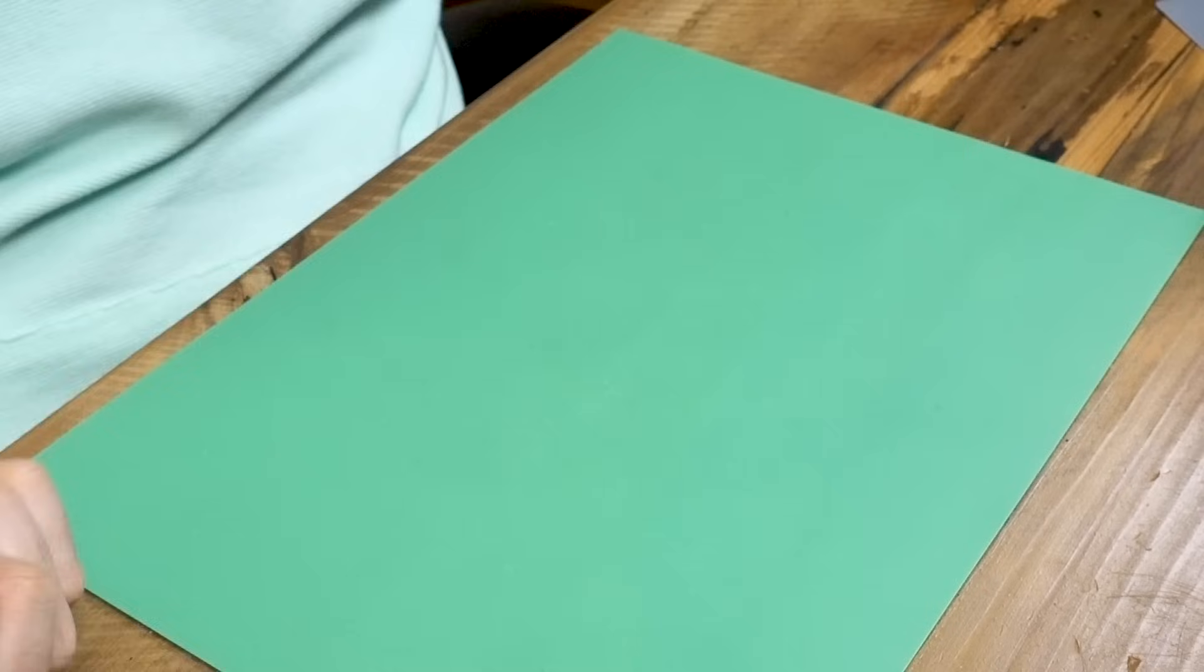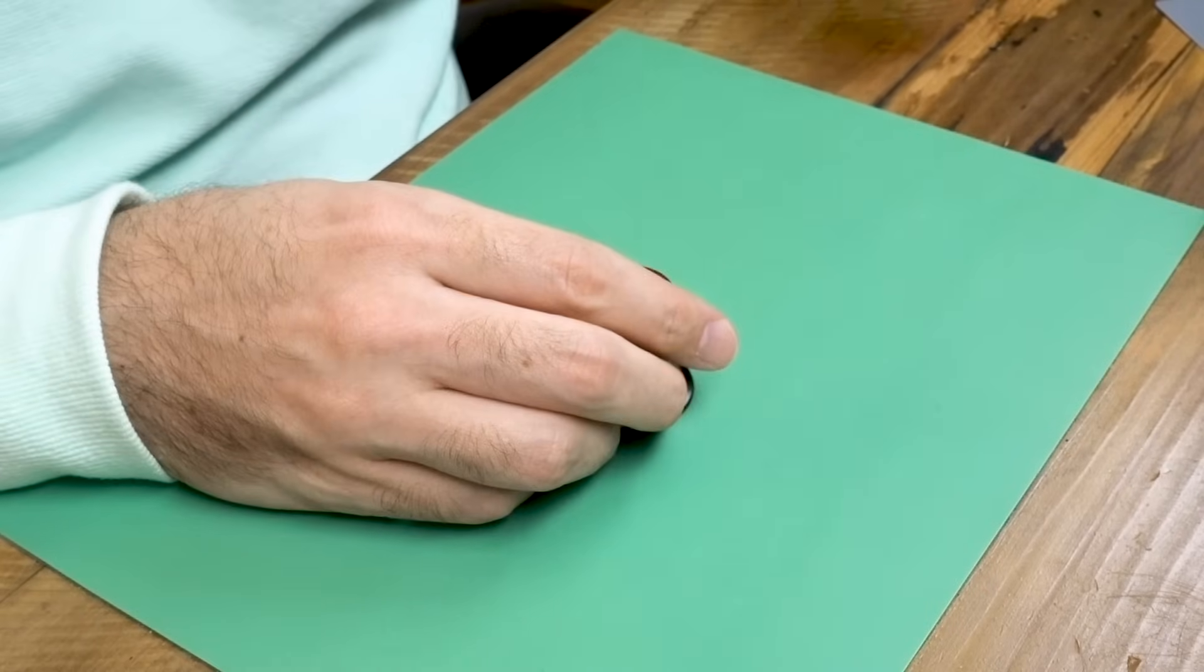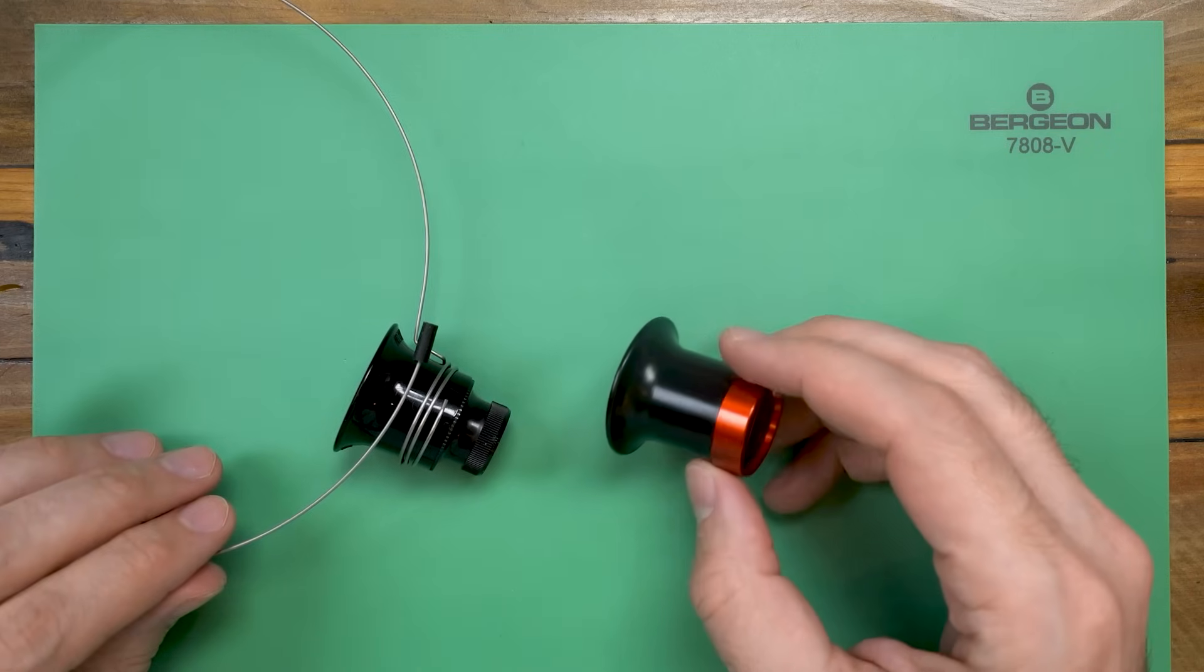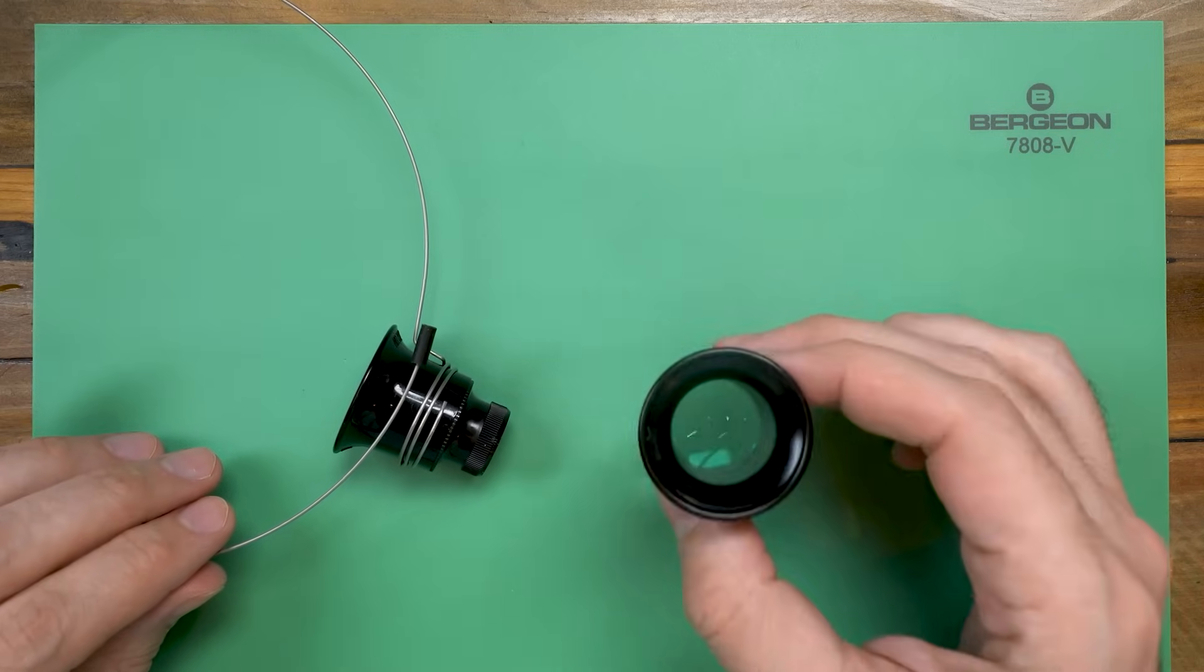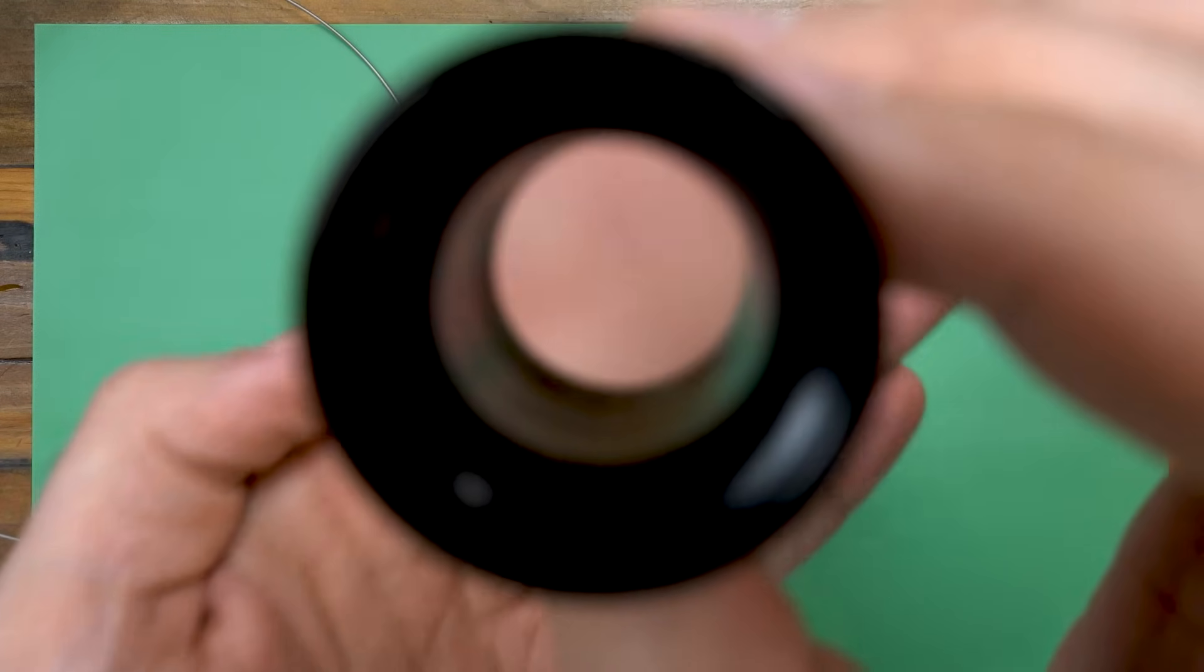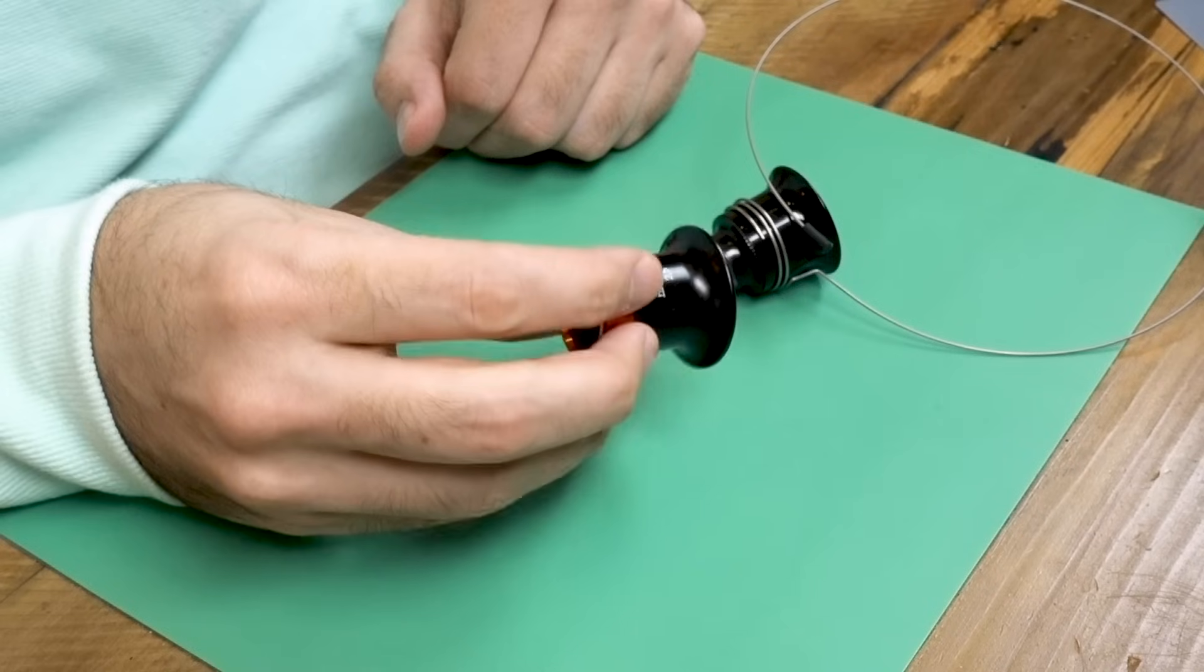The third essential tool is some kind of magnification. Watches are too small to work on reliably with the naked eye, as you won't be able to see patterns of wear, proper oil placement, pivot alignment, etc. The most common and cheapest method of magnification is the loupe.